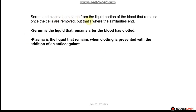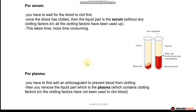Serum and plasma both come from the liquid portion of the blood that remains once the cells are removed, and that's where the similarities end. Serum is the liquid that remains after the blood has clotted, whereas plasma is the liquid that remains when clotting is prevented with the addition of an anticoagulant — something that prevents the clotting factors from clotting the blood.